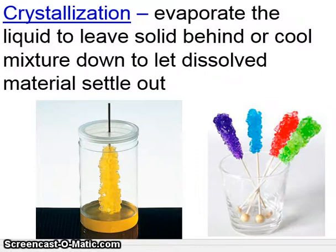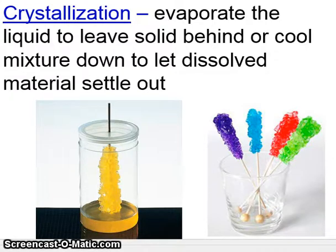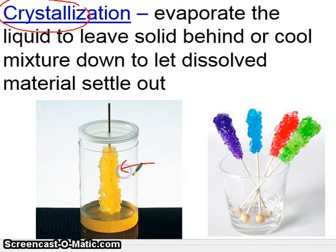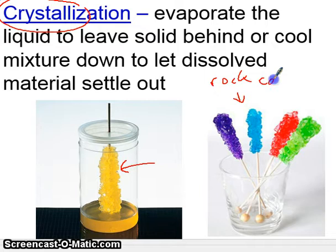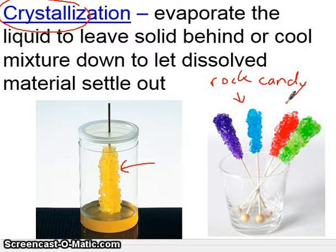The second technique is called crystallization. What you do here is evaporate the liquid to leave the solid behind. So if you had a solution of sugar water, you can evaporate the water — heat it up, let it evaporate — and the sugar will remain, because sugar is a solid. Crystallization refers to the fact that you're forming crystals, which are just solid little components. You can use this technique to form rock candy: make a solution of sugar and water, add food coloring, let the water evaporate, and the rock candy settles out.